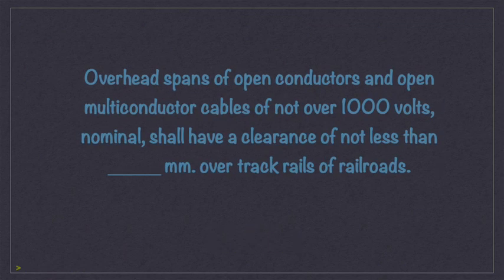Overhead spans of open conductors and open multi-conductor cables of not over 1,000 volts, nominal, shall have a clearance of not less than 7,500 millimeters over track rails of railroads.